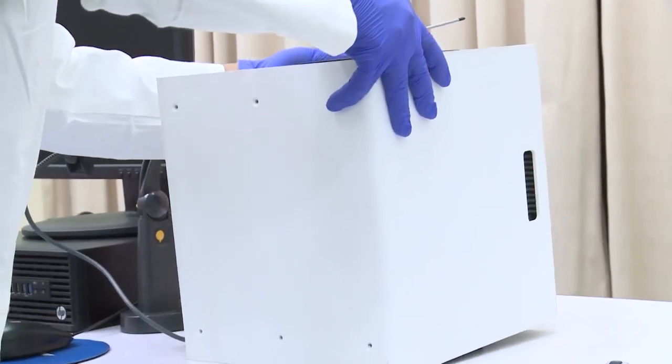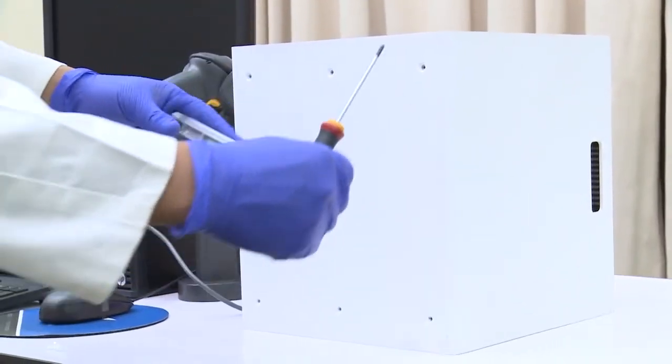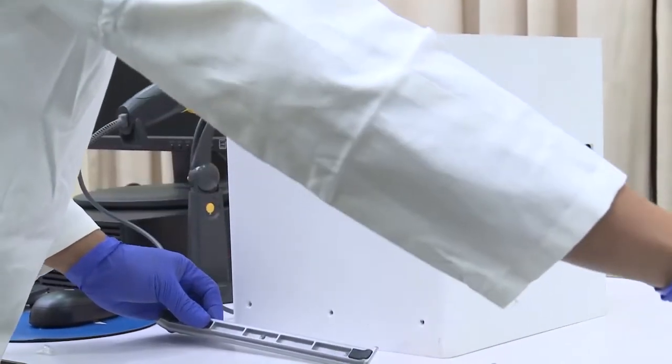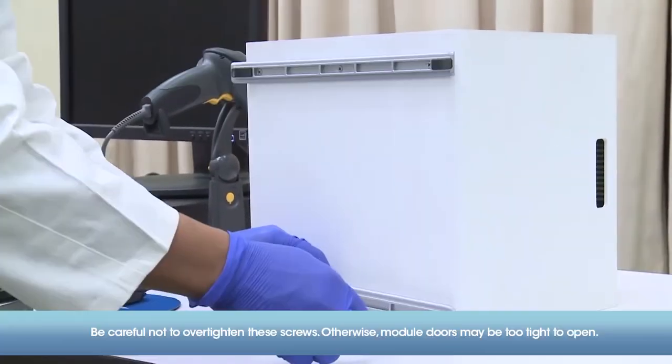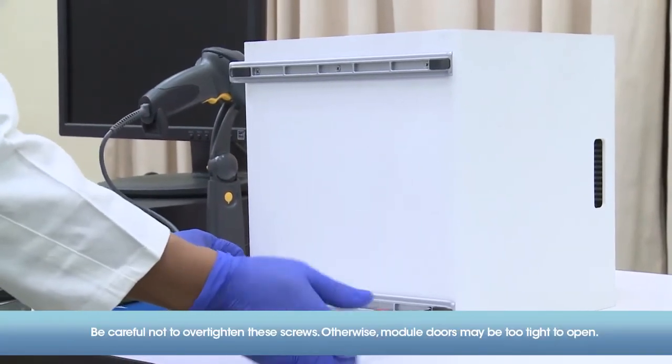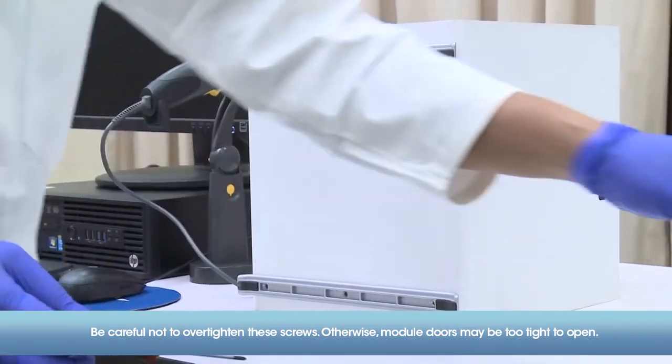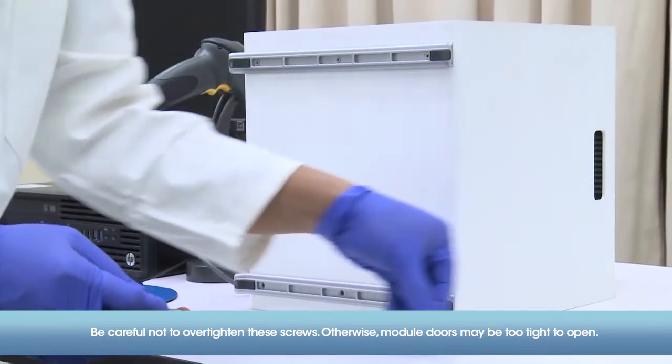Then place the machine on its front and put back the three screws on each foot. Be careful not to overtighten these screws, otherwise the module doors may be too tight to open or may not be opened.